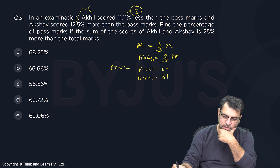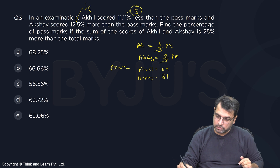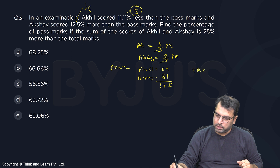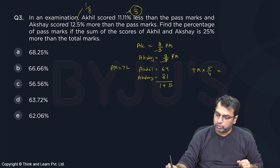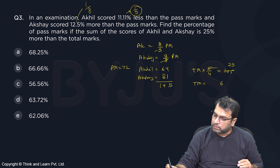Now, find the percentage of pass marks if the sum of the scores of Akhil and Akshay is 25% more than the total marks. The sum of Akhil and Akshay is 145. This is 25% more than the total marks — 25% more means 1/5 more, so 5/4 times the total equals 145. That gives total marks as 116.